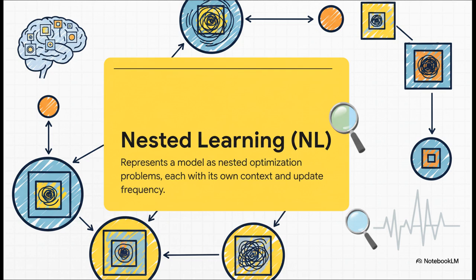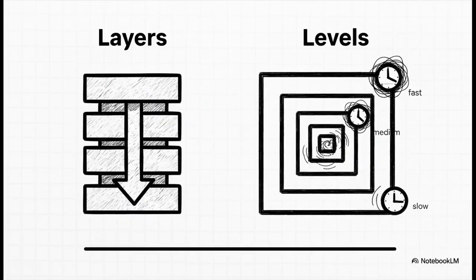The key is that each level learns at a different speed. Some are sprinting, processing info in milliseconds, while others are taking their time, consolidating knowledge over hours or even days. And this right here, this is the aha moment. This is the whole ballgame. For decades, the mantra in AI has been deeper is better. Just stack more and more layers. Nested learning says that's not enough. The future isn't just about going deeper. It's about adding more levels of learning, all running on different clocks.